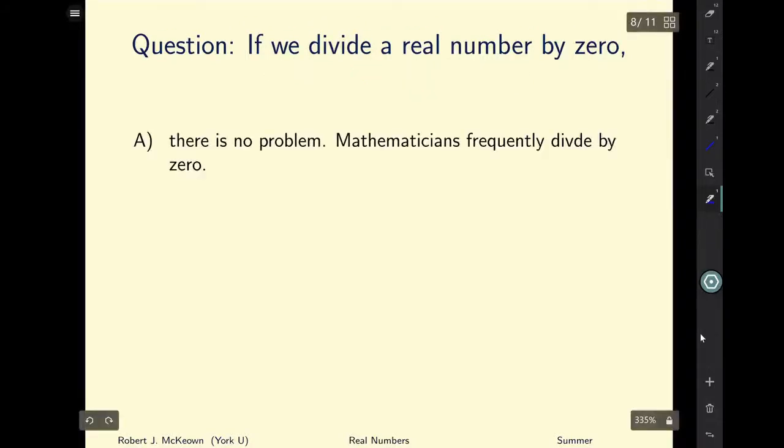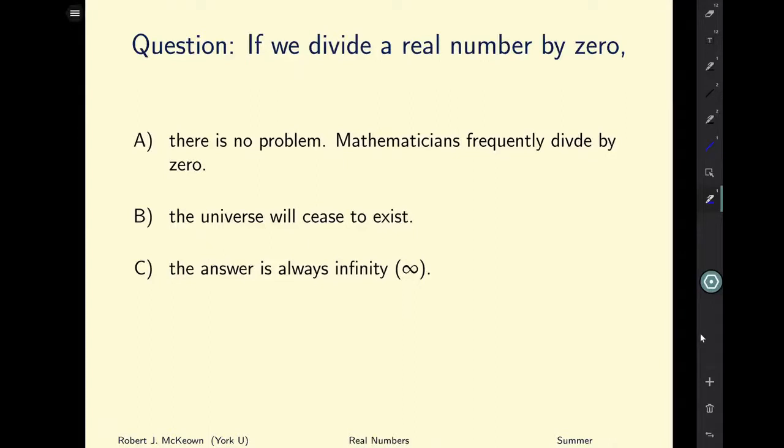And so this is a multiple choice type question. The first option is if we divide a real number by 0 there is no problem, mathematicians frequently divide by 0. The next option is that the universe will cease to exist. So that would cause some sort of reverse big bang and that would be the end of the universe as we know it. The answer any number divided by 0 is always equal to infinity. And our last option is if we divide a real number by 0 the answer is unknown.